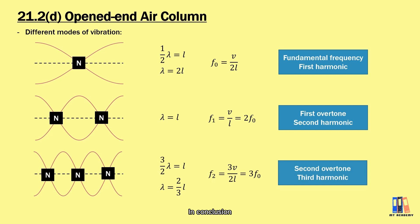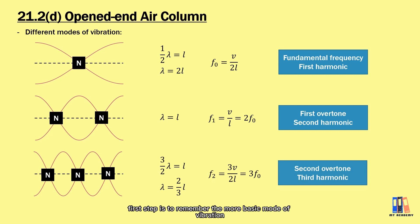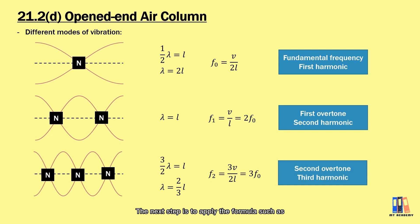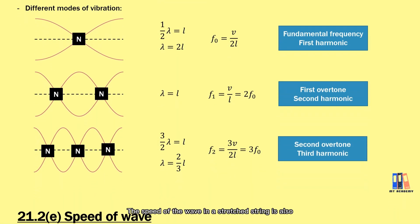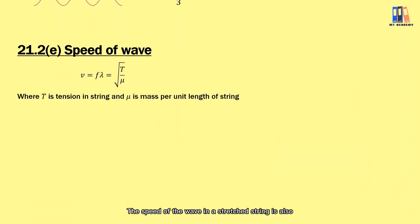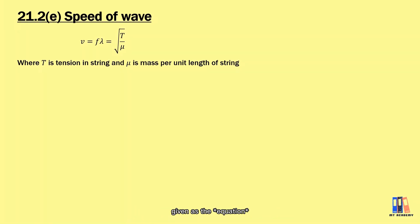In conclusion, to analyze the standing wave in a stretched string or air column, the first step is to remember the most basic mode of vibration and determine the relationship between the length and the wavelength. The next step is to apply the formula V = fλ. The speed of the wave in a stretched string is also given as the square root of tension divided by the mass per unit length of the string.